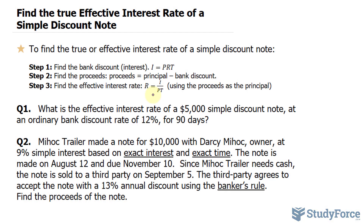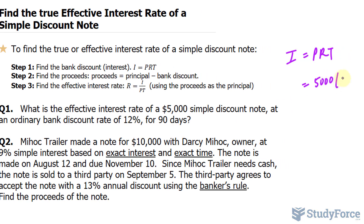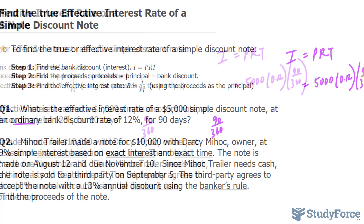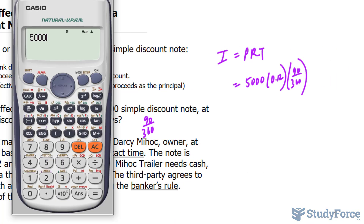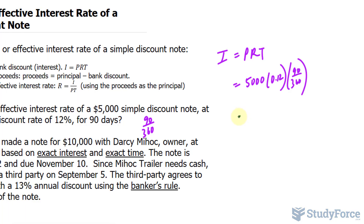Beginning with step number one, let's find the bank discount using the formula I = PRT. The principal is given as 5,000, the rate is 0.12, and since it's ordinary interest, the time is 90 days divided by 360 days. Calculating this: 5,000 times 0.12 times 90 over 360 gives us 150. That's the interest.